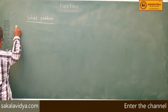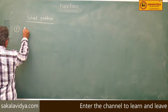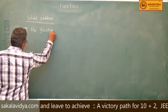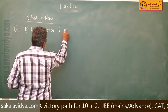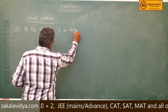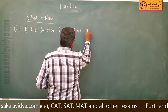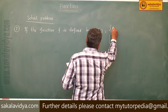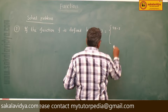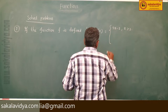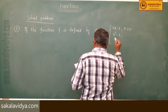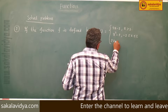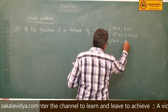Second problem. If the function f is defined by: f(x) = 3x − 2 when x > 3; f(x) = x² − 2 when −2 ≤ x ≤ 2; and f(x) = 2x + 1 when x < −3.